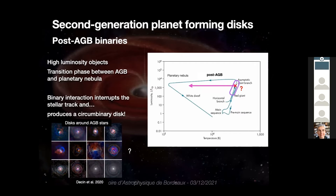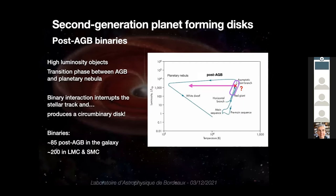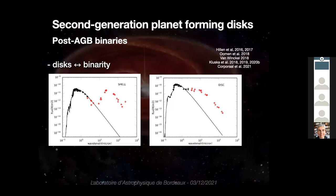We also start to see disk-like structures around AGB stars with ALMA, which could be the very first stage of the production of a post-AGB binary disk, though the evolutionary link between AGB and post-AGB targets is not yet clearly established. We know 85 post-AGB binary systems in the galaxy, and about 200 in the LMC and SMC. If you look at post-AGB stars — both single and binary — we can observe the spectral energy distribution, with flux on the y-axis and wavelength in microns on the x-axis, and the model of the photosphere shown in black.